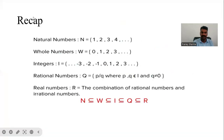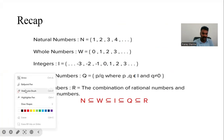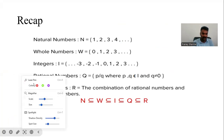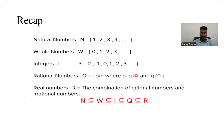Let us start from where we left. This symbol is known as epsilon, E-P-S-I-L-O-N. In mathematics, the meaning of this is 'belongs to' — q belongs to I. However, q cannot be zero. That is what we have written.